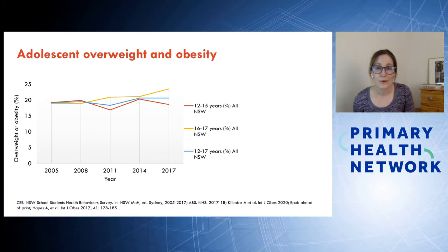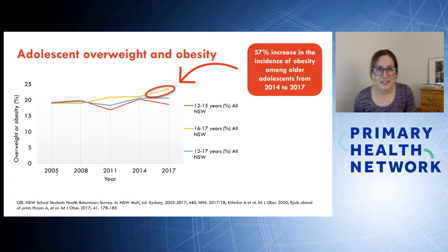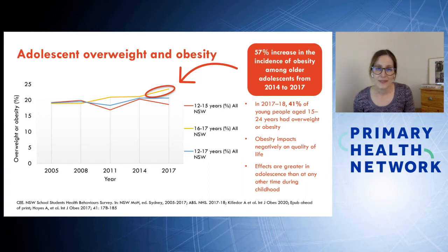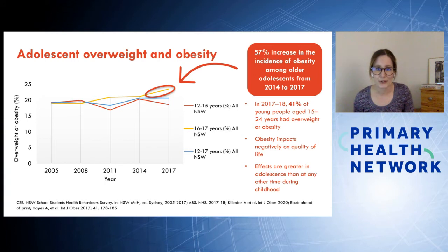We know there's been heavy investment in childhood overweight and obesity. But the yellow line, representing 16 to 17 year olds, shows a 57% increase in the incidence of obesity among older adolescents. In 2017 to 2018, 41% of young people aged 15 to 24 years had overweight and obesity. The current health system has a strong focus on children and on adults, and young people are often the forgotten population group in the middle.